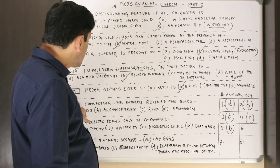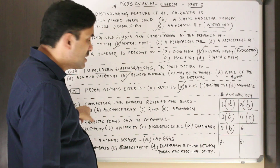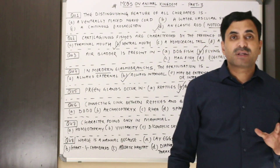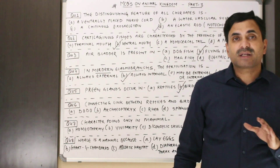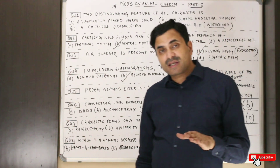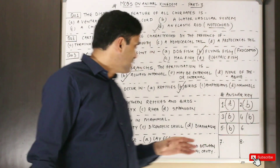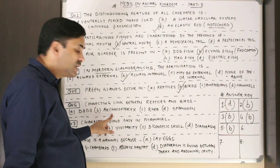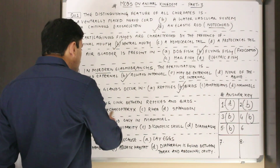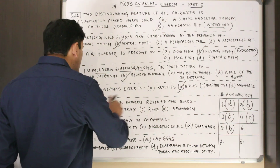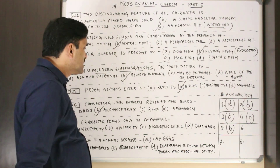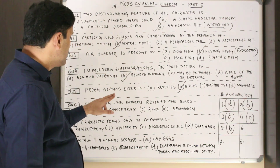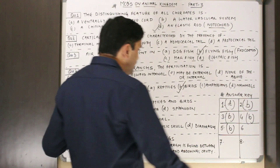Question number six: connecting link between reptiles and birds. A connecting link has characters of both groups. The options are dodo, Archaeopteryx, rhea, or Sphenodon. Archaeopteryx is the connecting link between reptiles and birds — it is a primitive bird with reptilian features. Question number six answer: B.